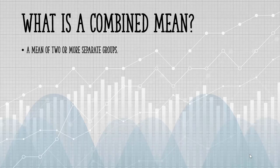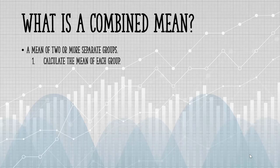A combined mean is a mean of two or more separate groups. The basic steps are: calculate the mean of each group, then combine the results.